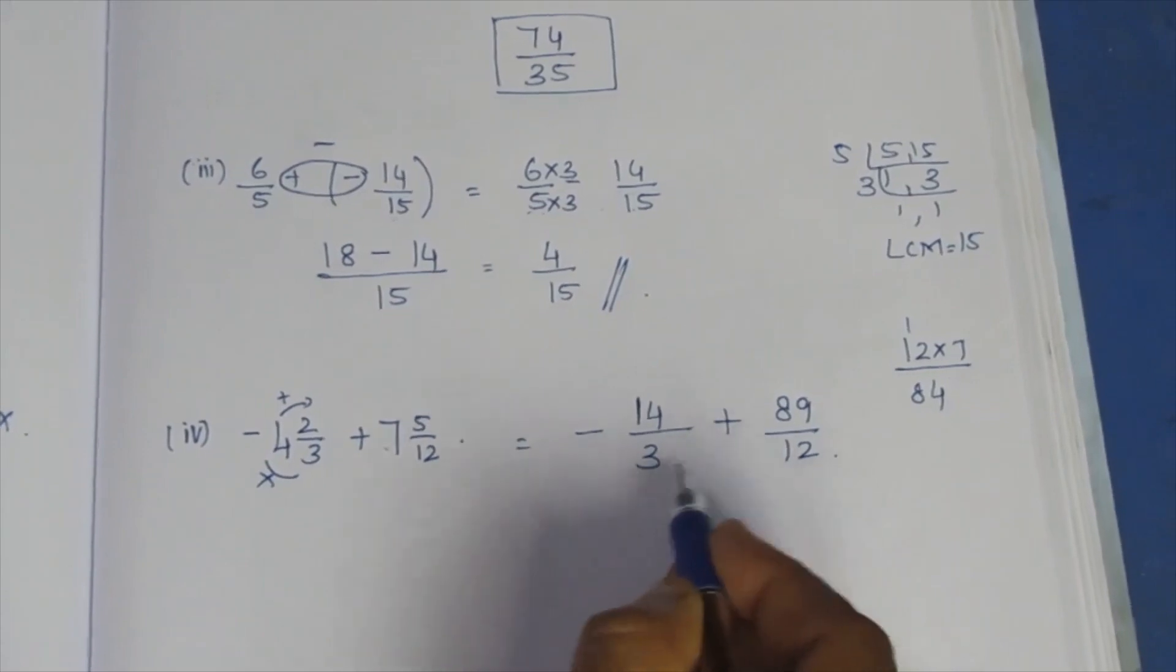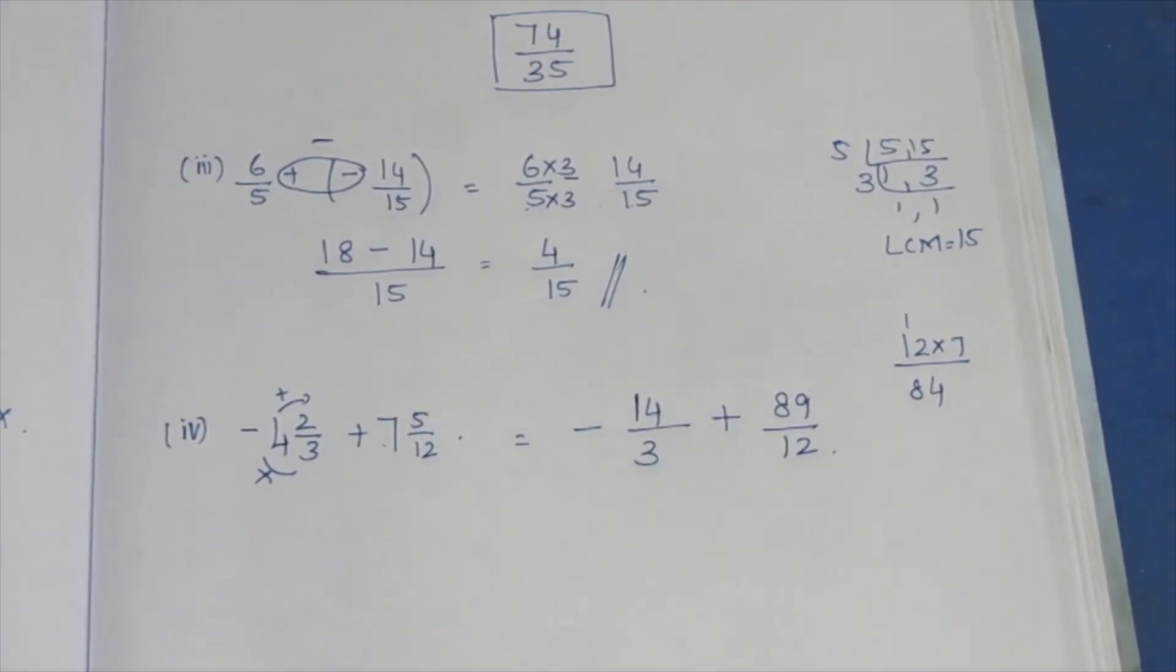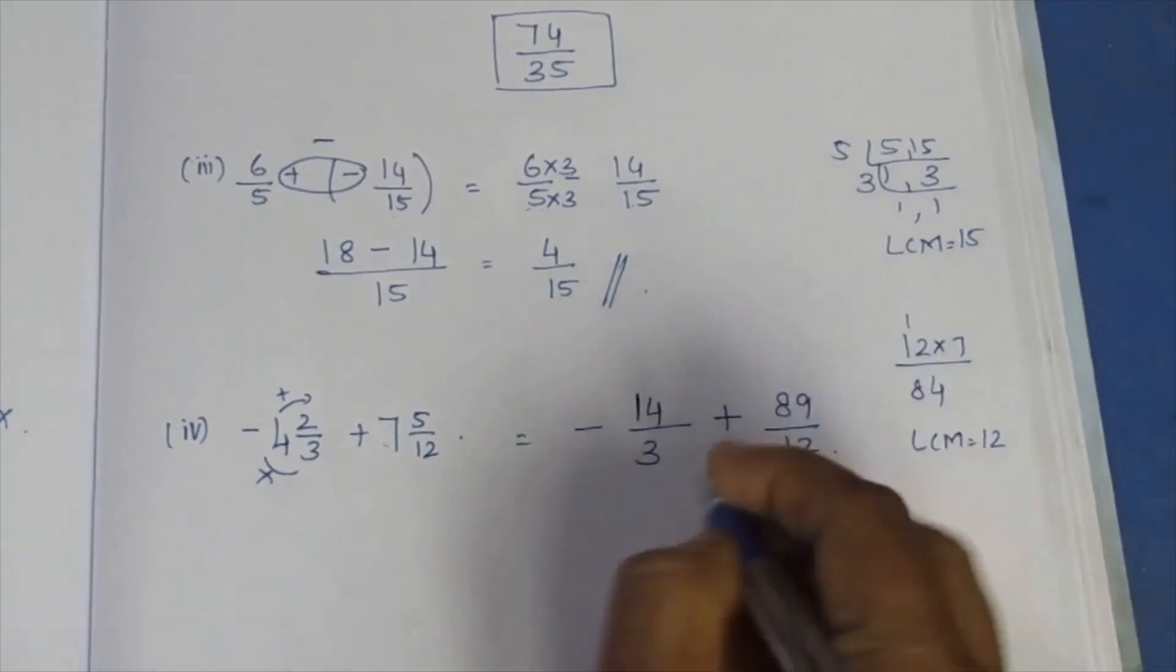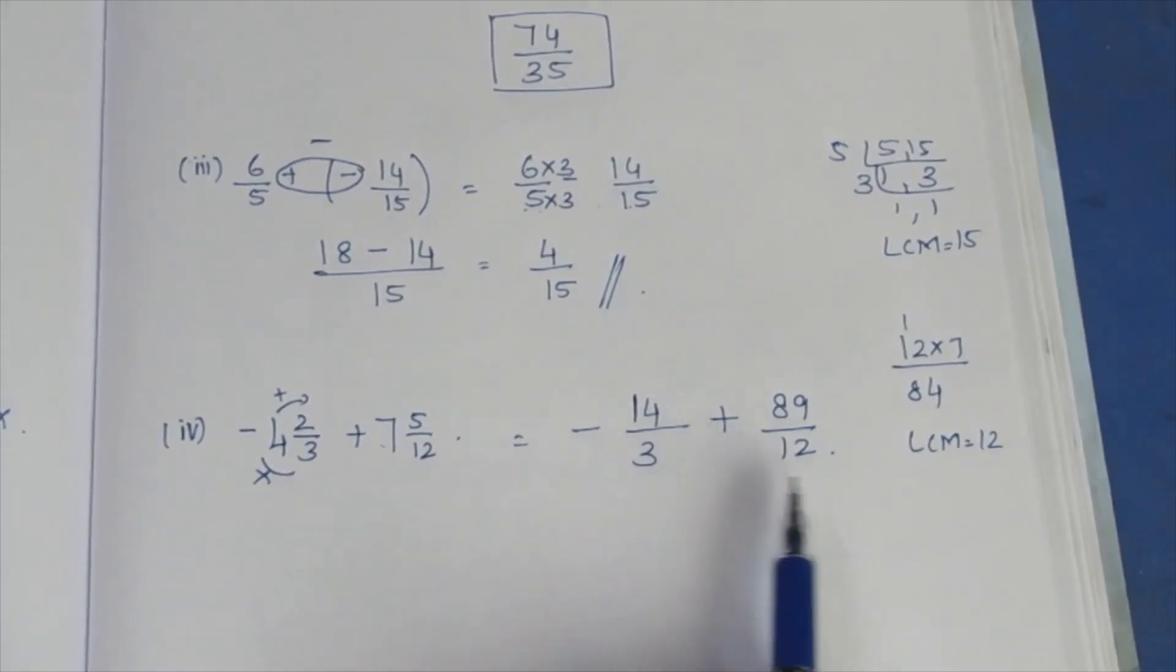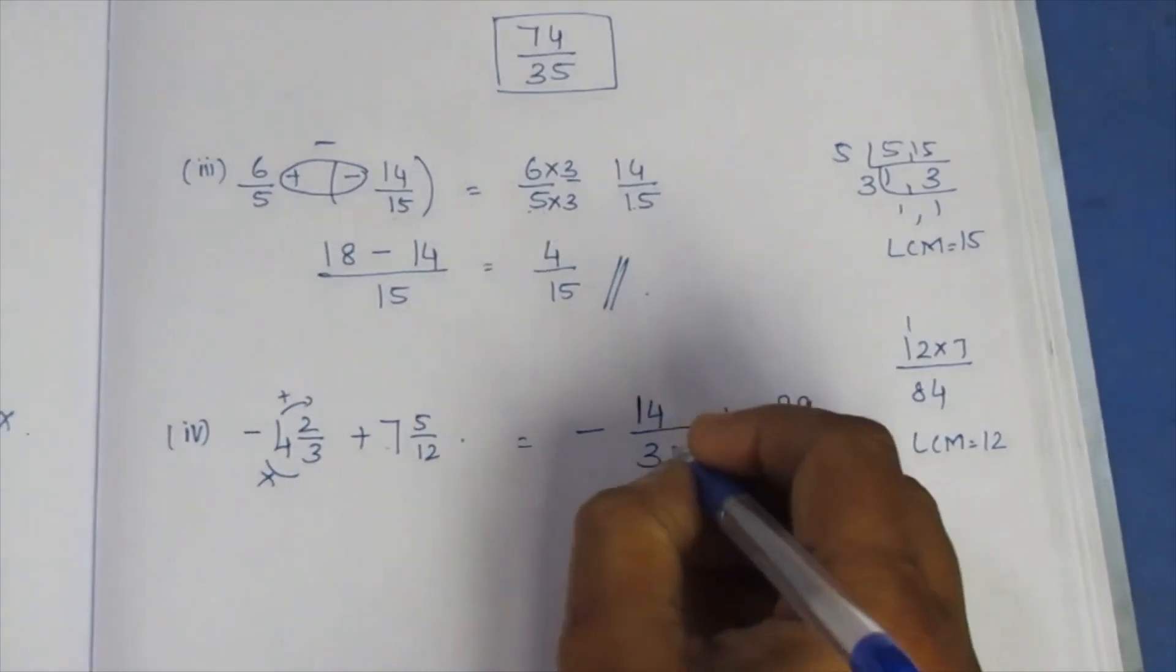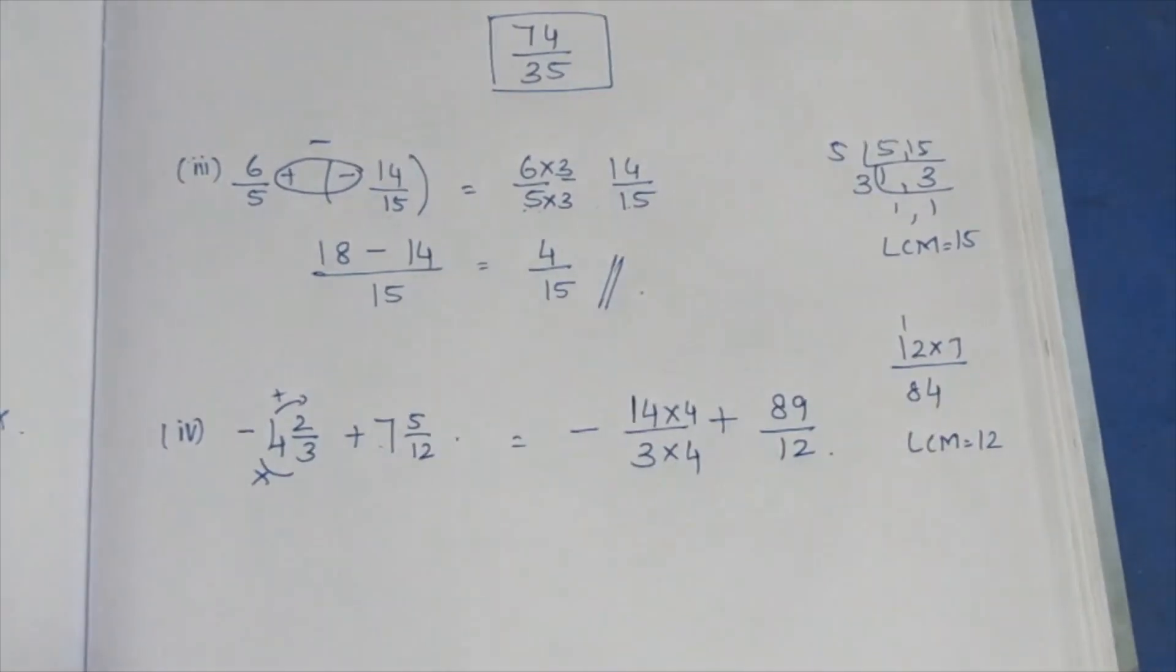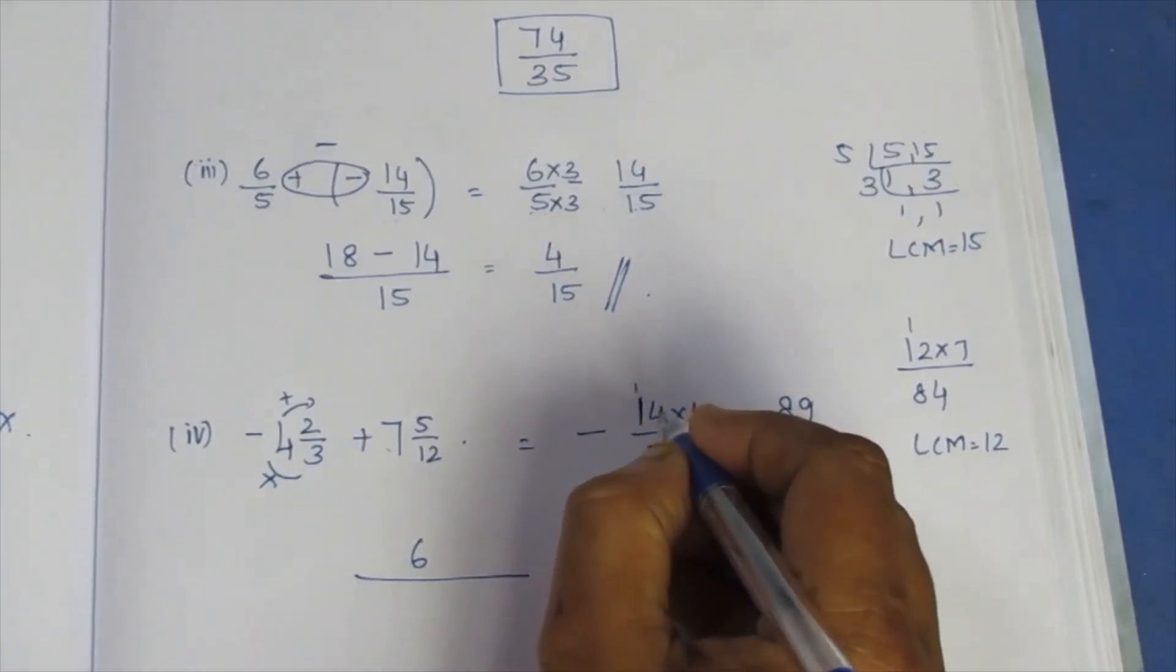This is 3 tables. So, 4 into 3 is 12. The LCM is 12. If you know LCM, there are two tables. The LCM is 12. 3 into 4 is 12. You will multiply. 4 times 4 is 16. 4 times 1 is 4.